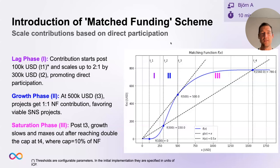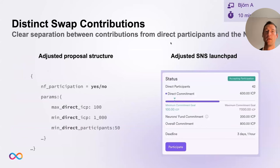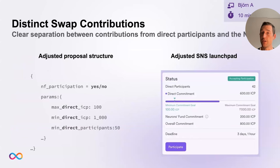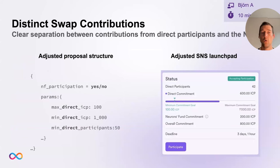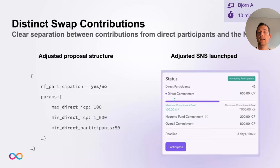The second component is distinct swap contributions. People requested it to be much more clear in the UX to really see what's coming from direct participants versus the Neurons Fund. This led to two adjustments: one is in the proposal structure itself, so a project submitting an SNS proposal specifies funding targets only with respect to direct participation, and the contribution from the Neurons Fund is considered an add-on. More importantly, the launch pad is adjusted so you can clearly see how much is collected only from direct participants over time, plus a separate line showing the commitment from the Neurons Fund.